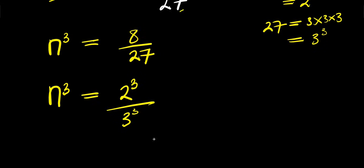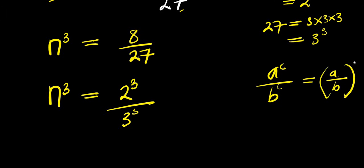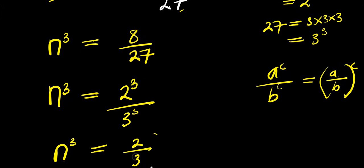Now, if you have a^c divided by b^c, this equals a divided by b, raised to the power of c. So we have n³ equals (2 divided by 3) raised to the power 3.